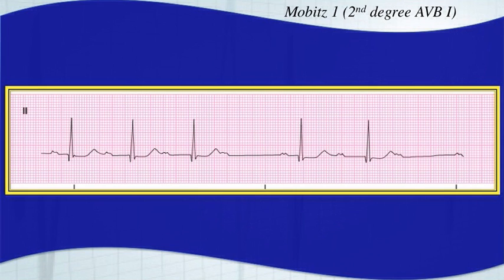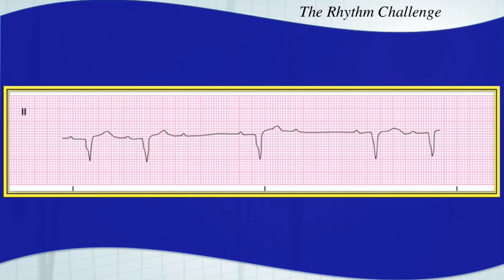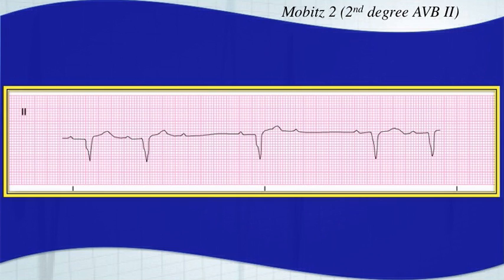Here is your next arrhythmia. Make sure you give it a chance to interpret it. This is a Mobitz II, a second degree type II — a consistent PR interval with dropped beats. Mobitz II: consistent PR interval with dropped beats.